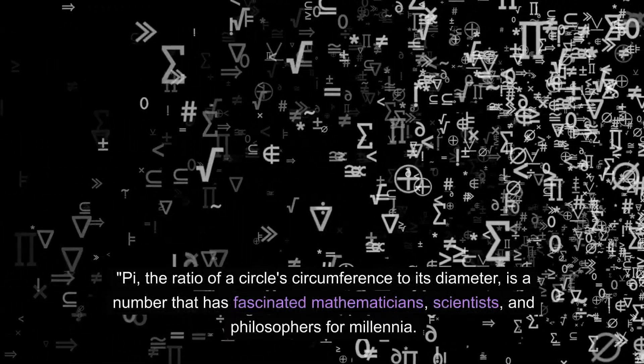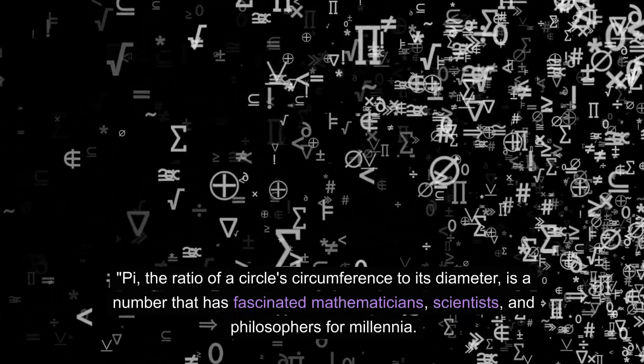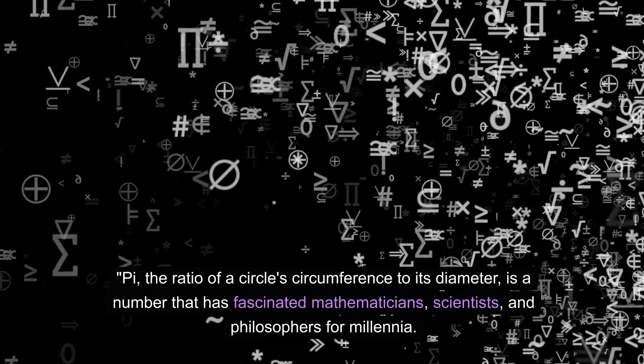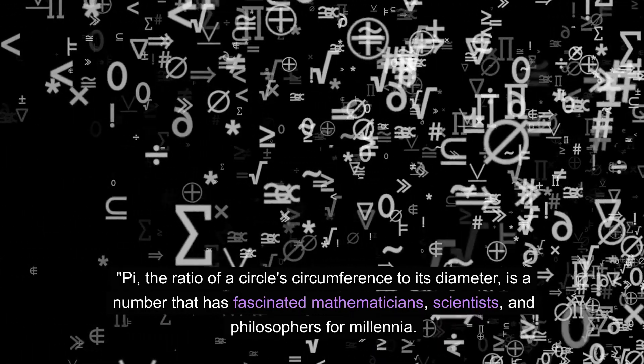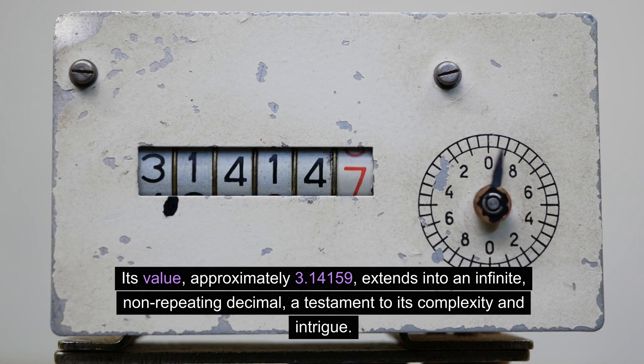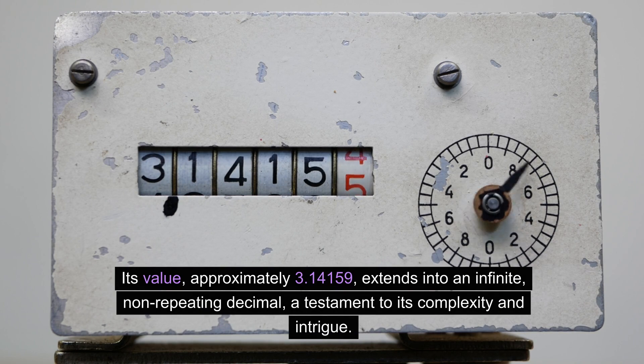Pi, the ratio of a circle's circumference to its diameter, is a number that has fascinated mathematicians, scientists, and philosophers for millennia. Its value, approximately 3.14159, extends into an infinite, non-repeating decimal, a testament to its complexity and intrigue.